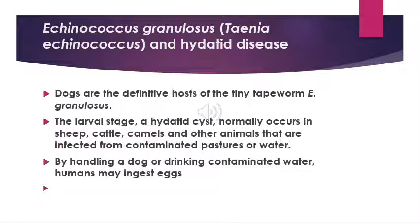Echinococcus granulosus infection is initially asymptomatic and may remain so for many years. Clinical features and complications depend upon the site and size of the cysts. The liver and lungs are affected in approximately 67% and 25% of cases, respectively. Most patients have single organ involvement, and a single cyst is present in more than 70% of cases. Diagnosis is typically established by ultrasound imaging in combination with serologic testing, usually ELISA. Disease is probable when ultrasound demonstrates infoldings of the inner cyst wall, separation of the membrane from the cyst wall, or hydatid sand.